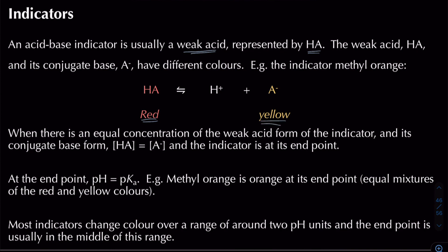This dissociation is reversible. When we have an equal concentration of the indicator in its weak acid form and its conjugate base form — where the concentration of HA equals the concentration of A⁻ — the indicator is at its end point. At this point, pH equals pKa, so methyl orange appears orange because we have an equal mixture of red and yellow colours.